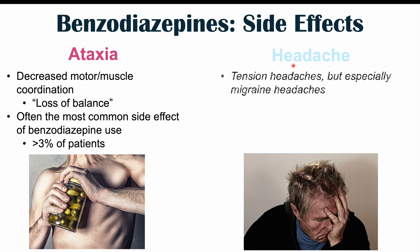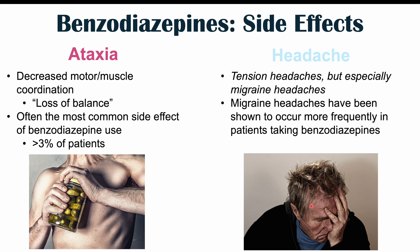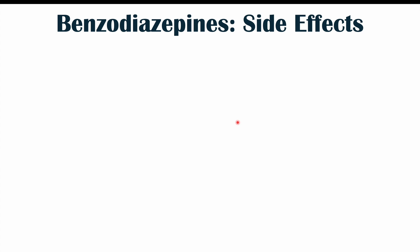Headaches are another side effect. They can be tension headaches with a band-like pain around the head, or migraine headaches, which are unilateral, pounding, and can have associated nausea and aura-like symptoms. Migraine headaches in particular have been shown to occur more frequently in patients taking benzodiazepines.